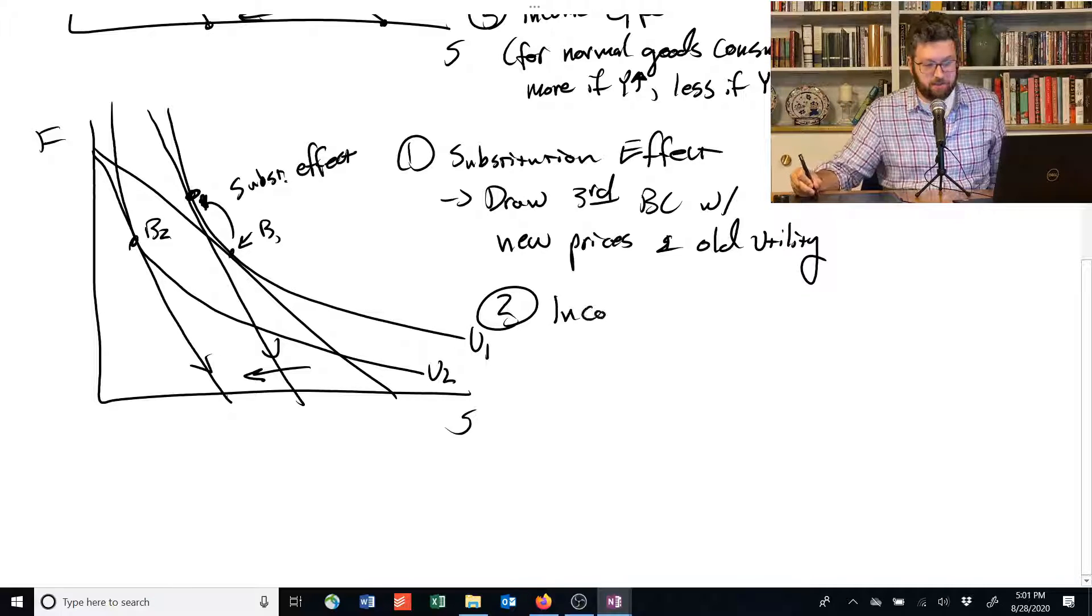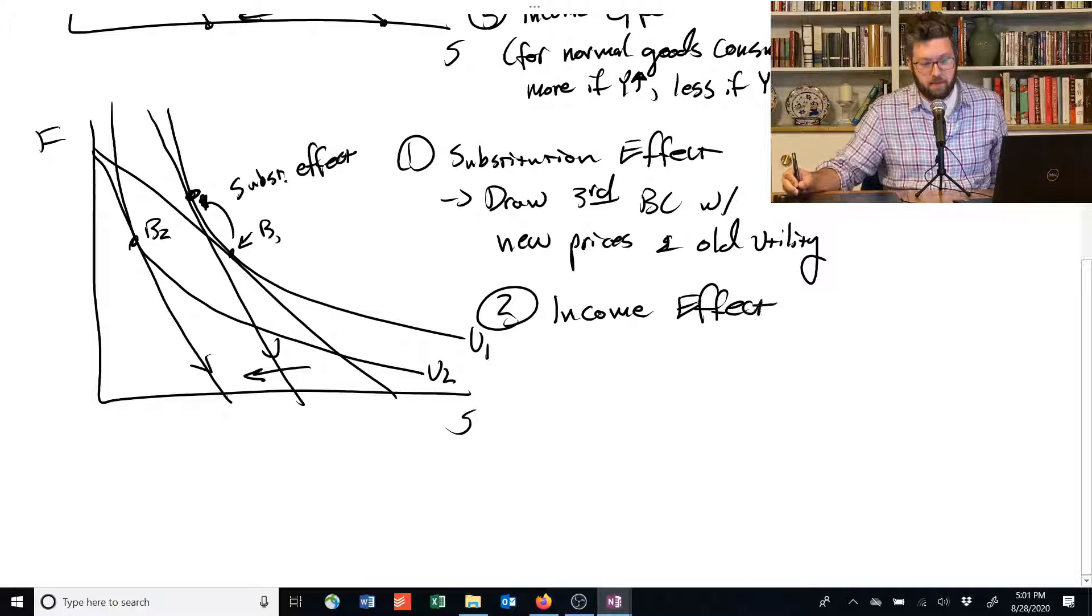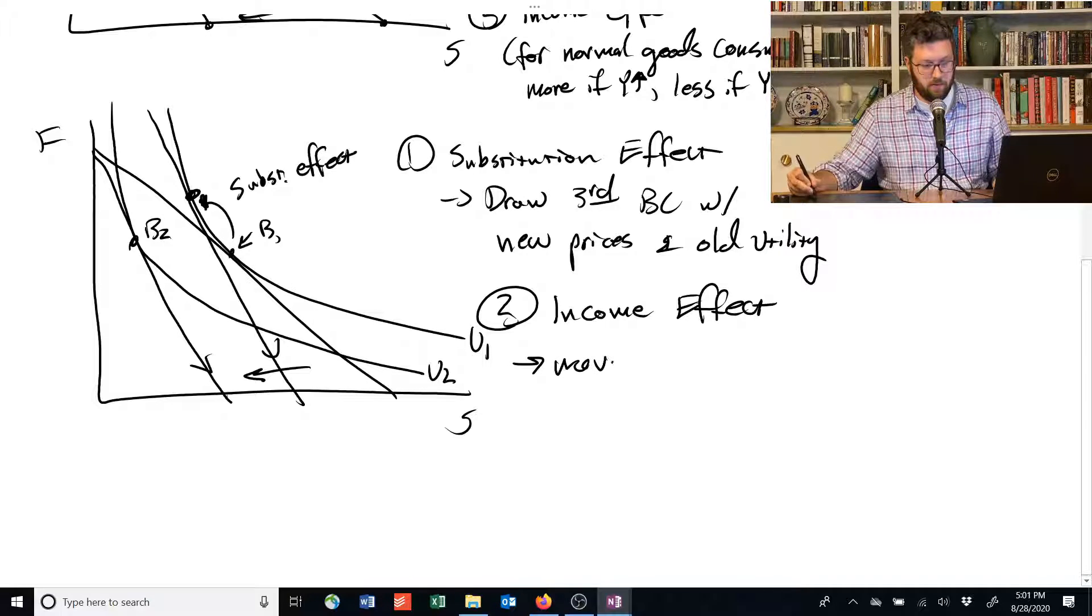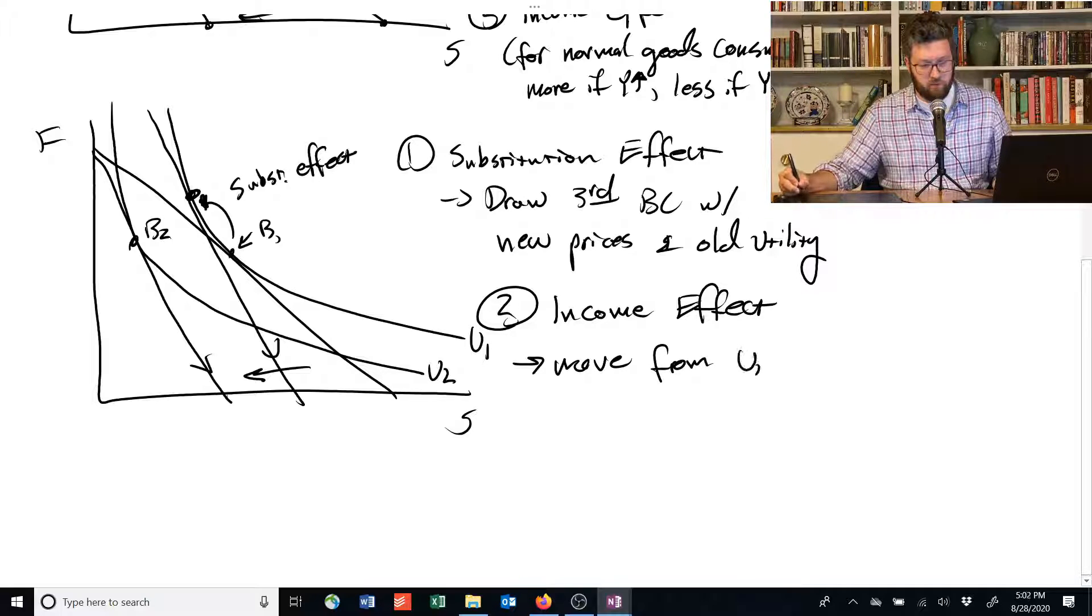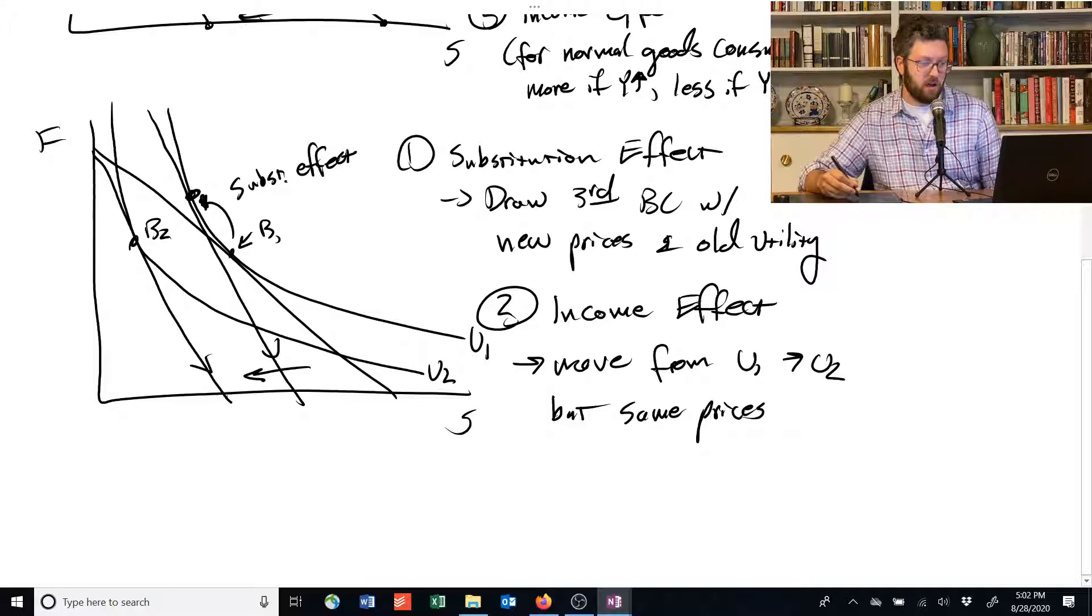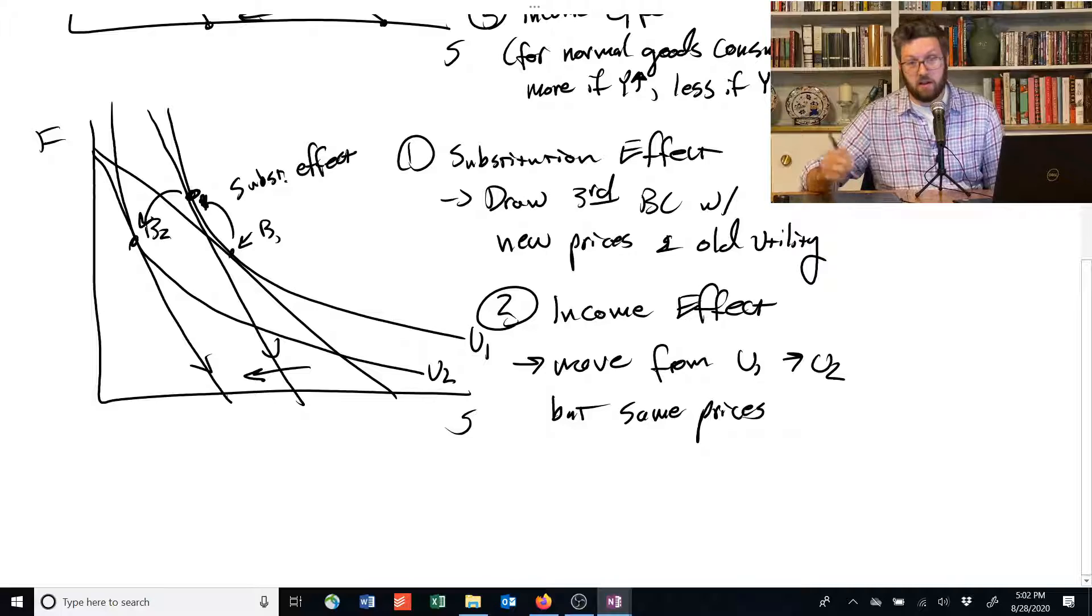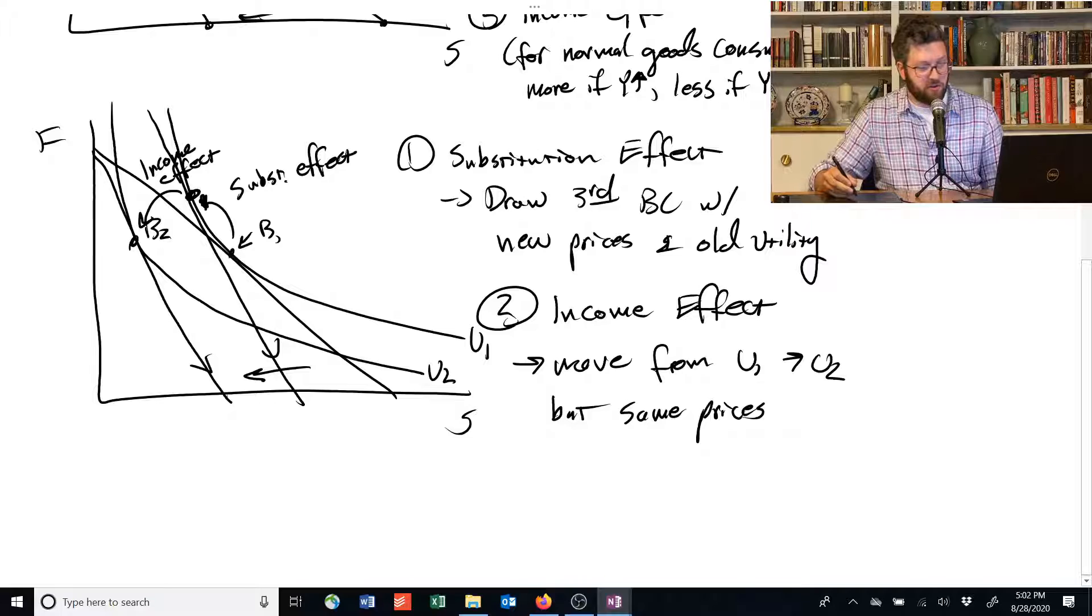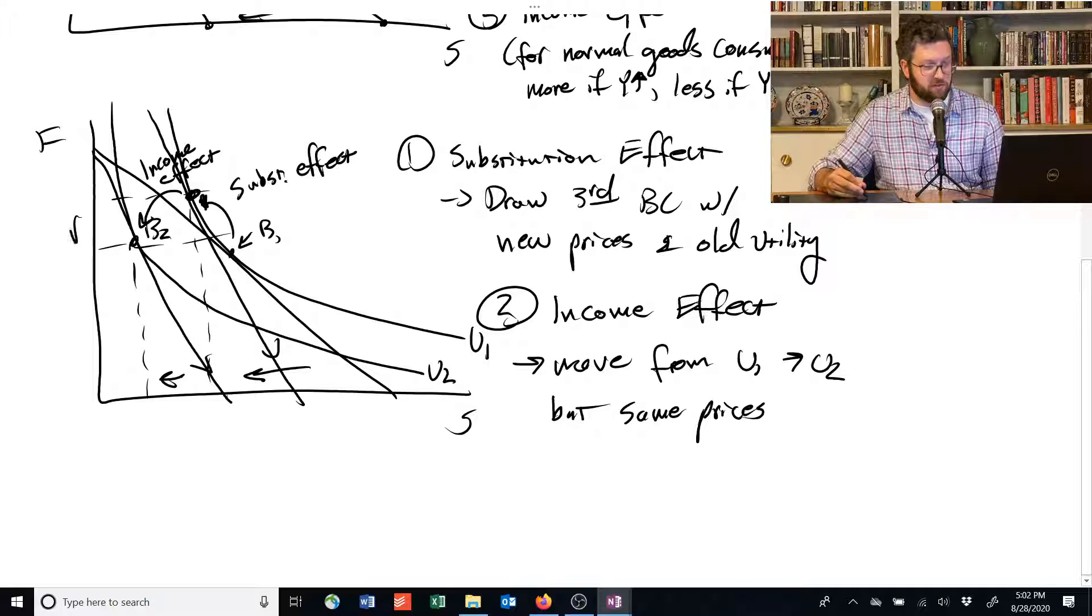The income effect is the movement from one budget, one indifference curve to another. So this is move from U1 to U2, but with the same prices. So the prices here are the same on this new third curve and the final budget constraint. And we jump from here to here. This is like a reduction in our income. And this movement is the income effect. And you can see that the income effect involves a reduction in both the amount of shelter and the amount of food that this person consumes.